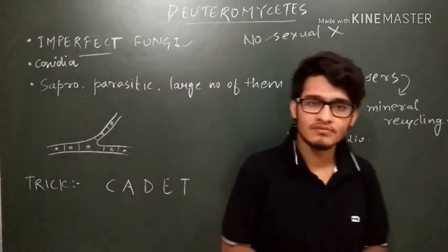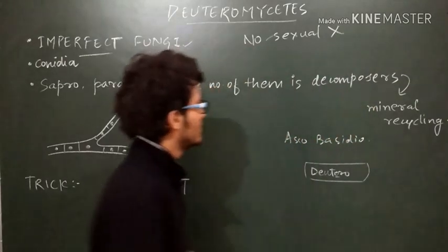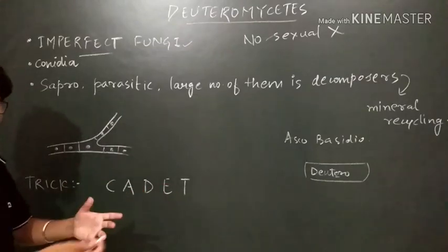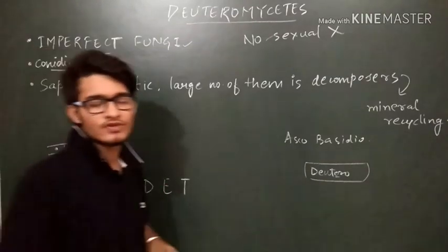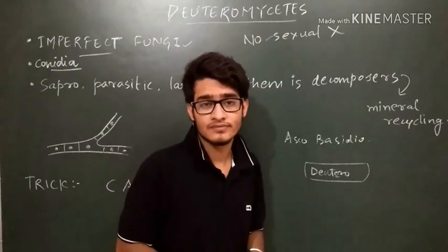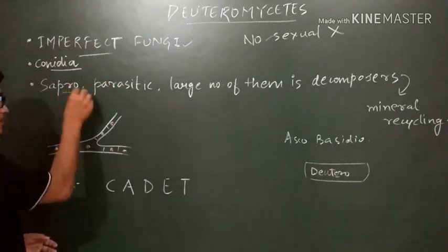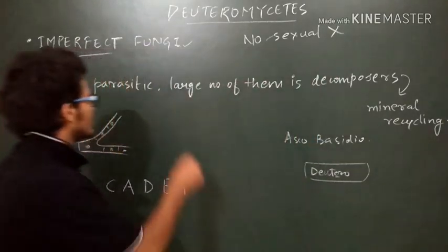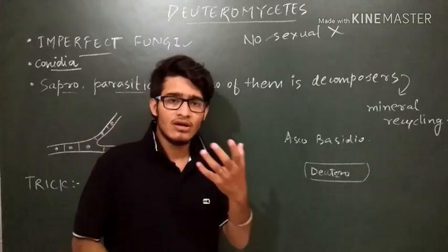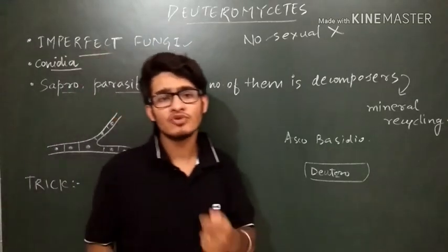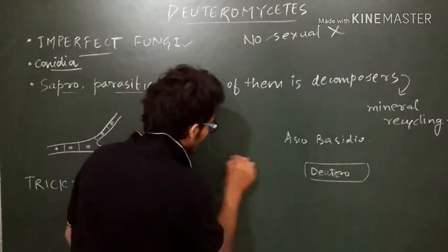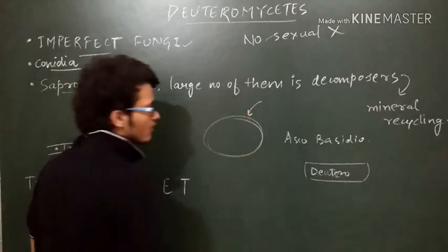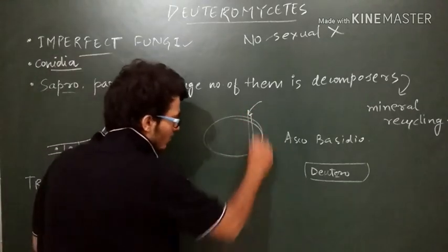This is the classification. Since there is only asexual reproduction in Deuteromycetes, conidia are the asexual spores found in them. They can be saprophytic — like most fungi, growing on dead and decaying matter — or they can be parasitic and cause different kinds of disease. But most of them are decomposers, growing on organic matter and secreting enzymes to break it down.